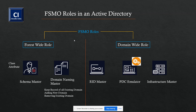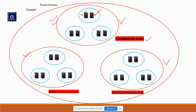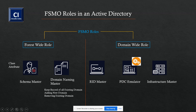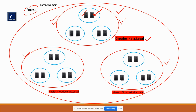Next are domain-wide roles. Always remember: these three roles will exist in all domains. If there are three domains — one parent and two child domains — then all three domains have all three domain-wide roles. Under the parent domain, RID, PDC, and infrastructure will be there. Inside health and telecom as well, these roles will be there.